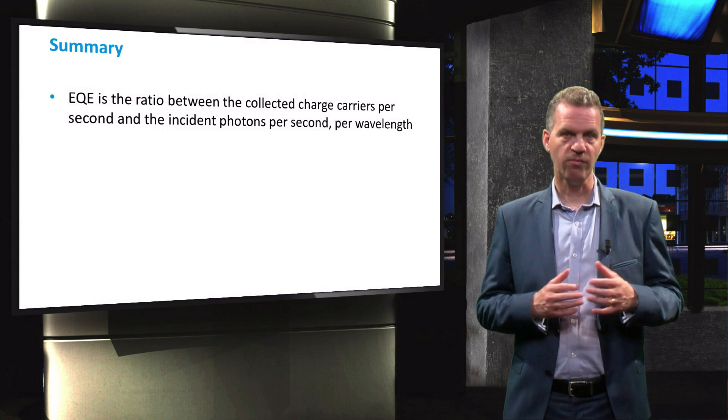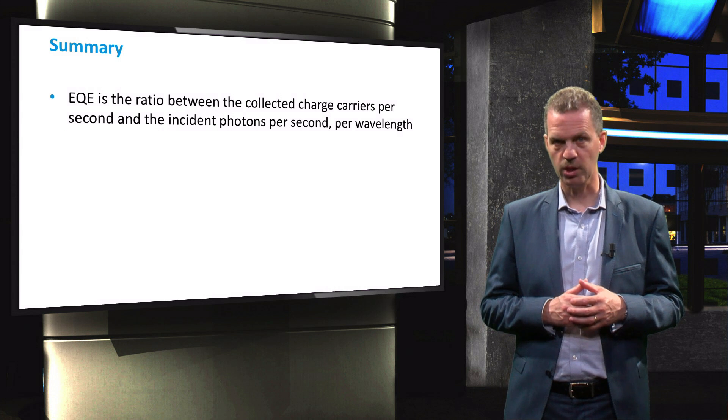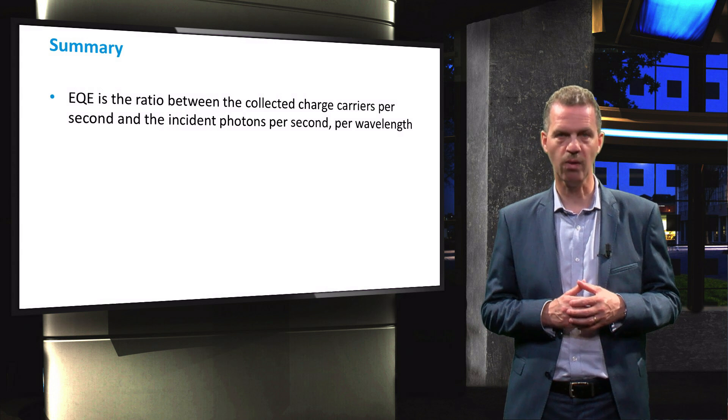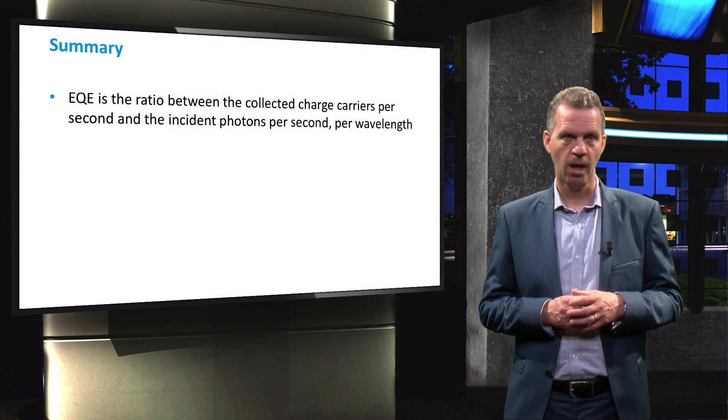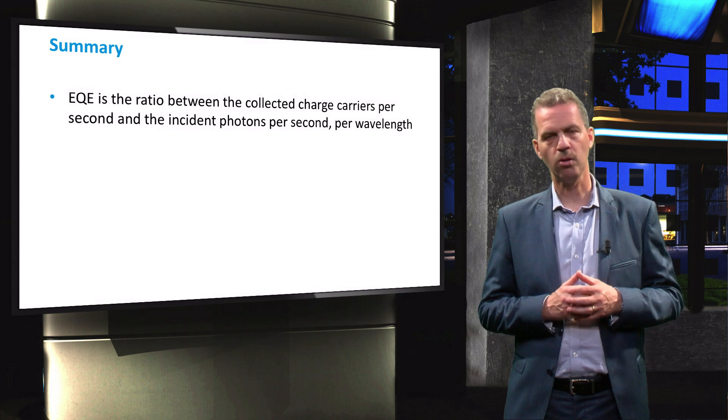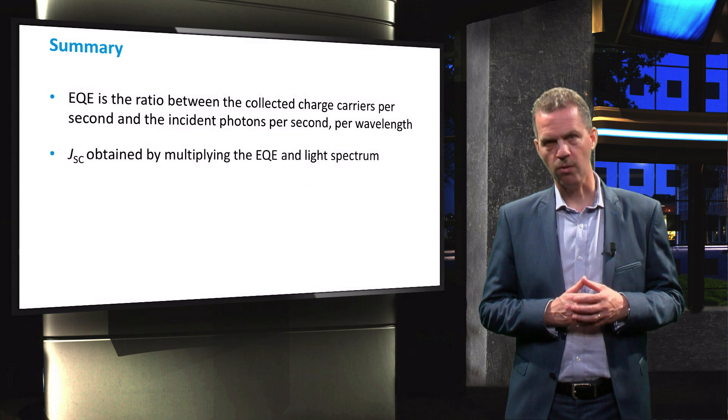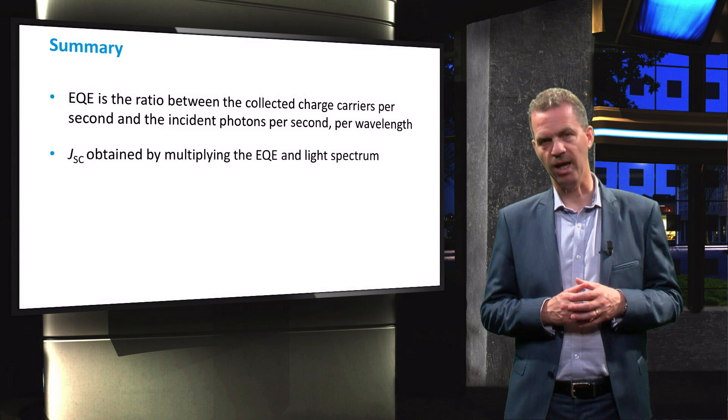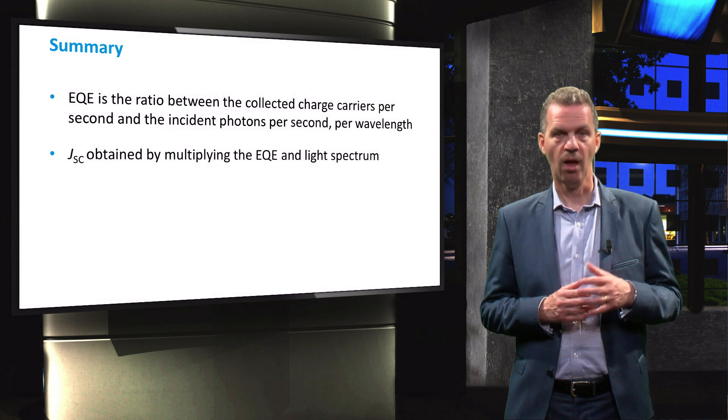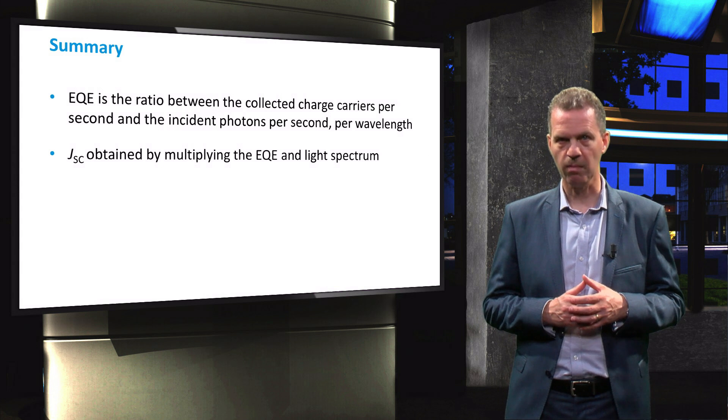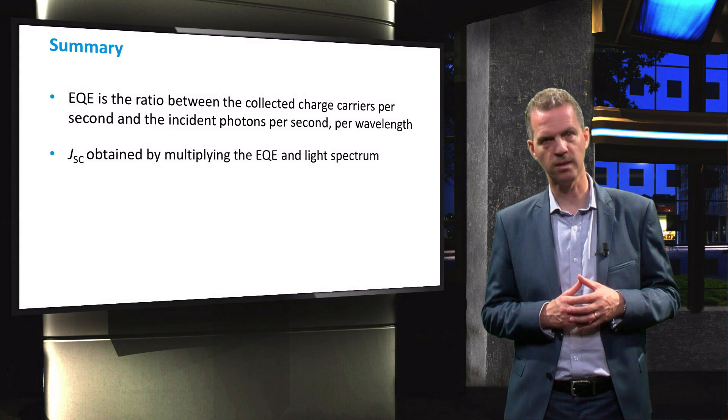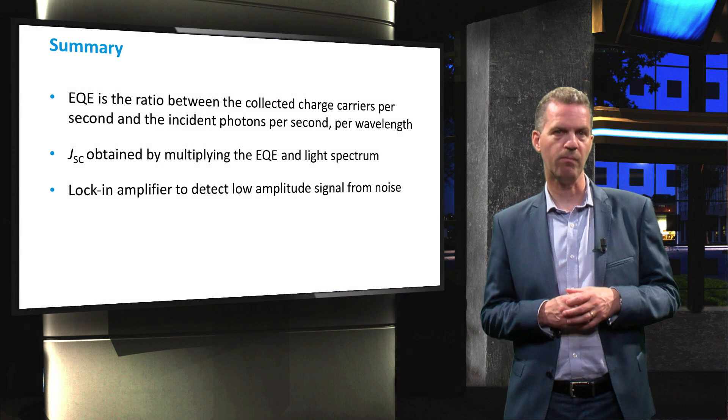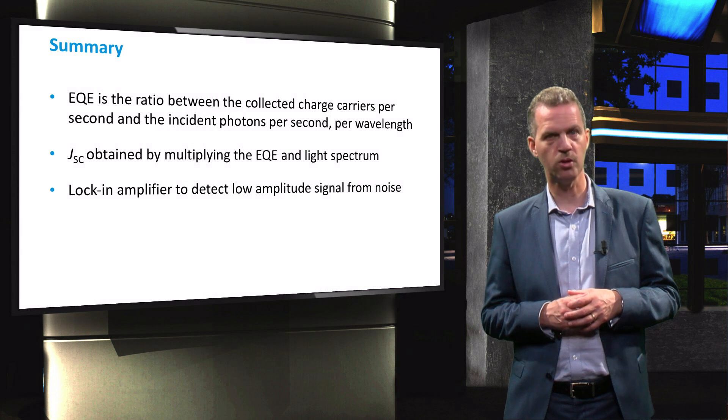To summarize this video, we have discussed the definition of the external quantum efficiency as the ratio between the collected charge carrier flux and the incident photon flux for each wavelength. By measuring the reflectivity of the solar cell, it can be transformed into the internal quantum efficiency. The short-circuit current density of the solar cell can be determined accurately by multiplying the EQE with the solar spectrum and integrating over all wavelengths. This value can be used to correct for the spectral mismatch of the solar simulator used for the illuminated JV curve measurement. Finally, we have discussed the basic EQE setup with a lock-in amplifier as an instrument to obtain the low-amplitude measurement signal from noise.